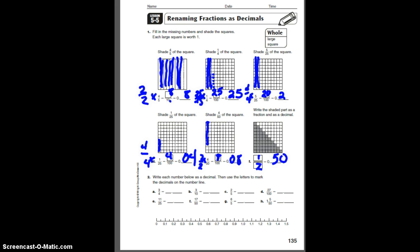Next one. It says, write the number below as a decimal, and then use the letter to mark the decimal on the number line. I love this. This is kind of what we were working on today. We were really having trouble with that number line one. So, first thing we need to do is to write each number as a decimal.